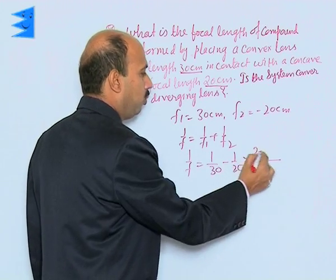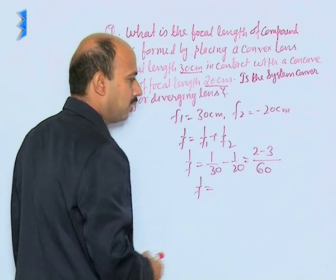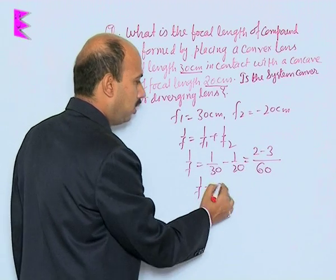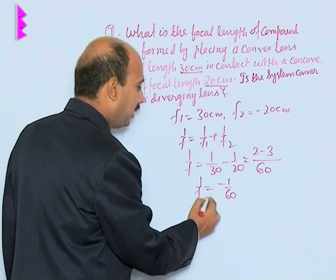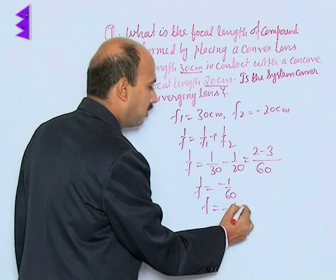That is 2 minus 3. So 1 upon F equals minus 1 by 60, and then it can be written F equals minus 60 centimeter.